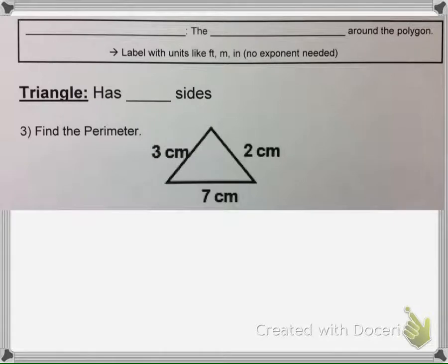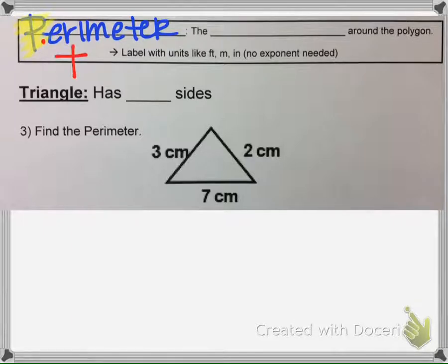Okay, next thing we're going to talk about is perimeter, because perimeter does involve adding. So perimeter, the word perimeter starts with the letter P, so that helps me remember P for plus. To find perimeter, we're going to find the distance around the polygon.